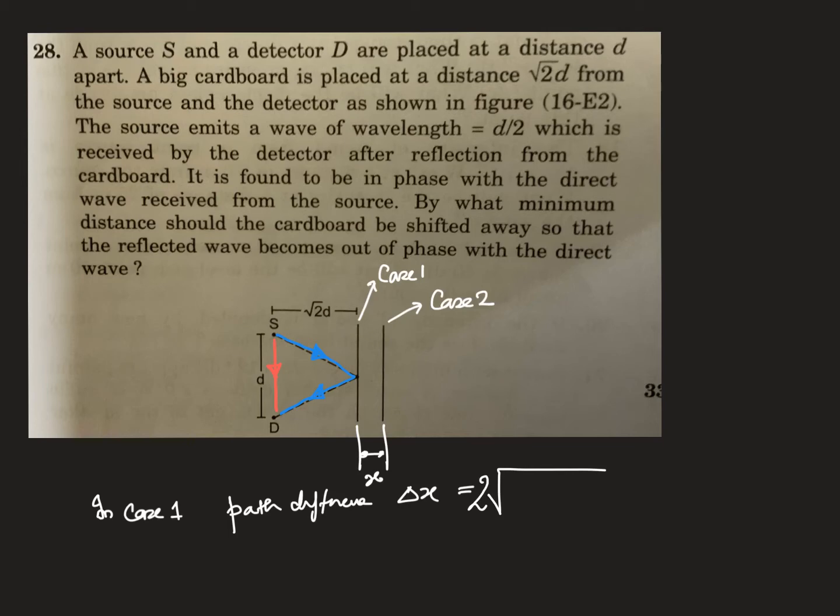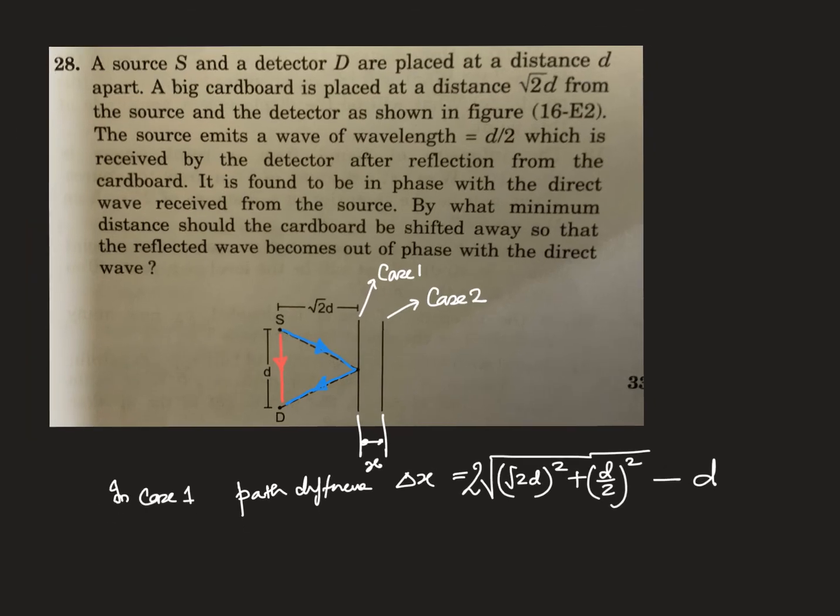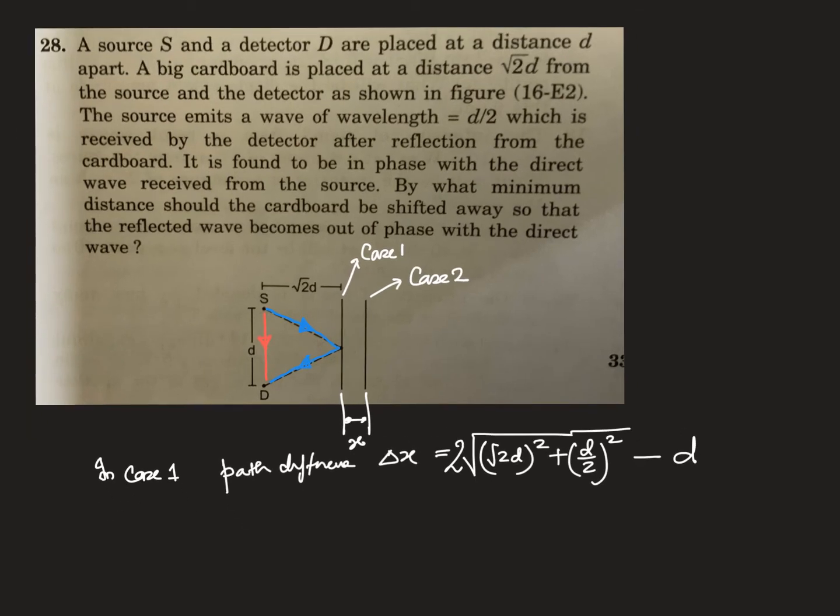So it is 2 times root over root 2d square plus d/2 square minus d. So this is the path difference. How much is this? 2 root of 2d² plus d²/4 minus d.